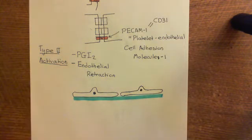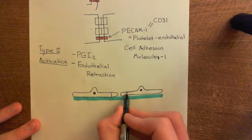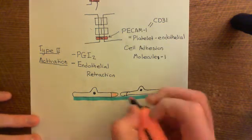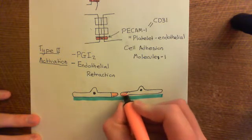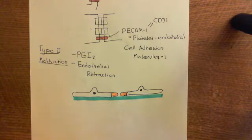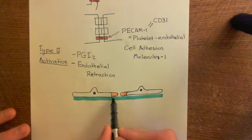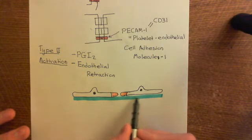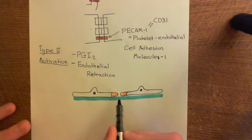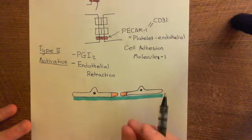In type 2 activated endothelial cells, the actin and tubulin cytoskeleton in the edges of the cells is dismantled. When you do that, the cell membrane collapses down — there's nothing holding it up anymore — and the cell retracts. The same happens to the neighbouring endothelial cell, creating a massive gap between them. This increases vascular permeability even more in the capillaries and post-capillary venules.